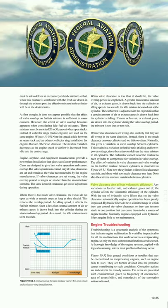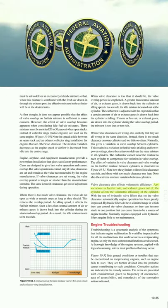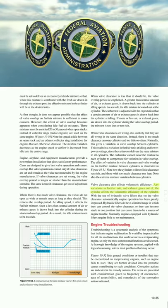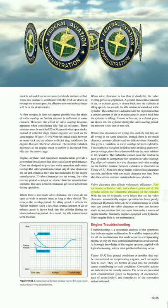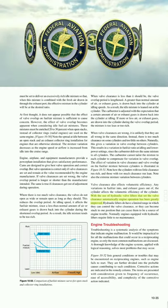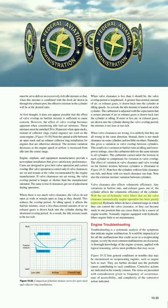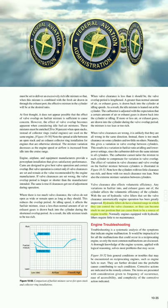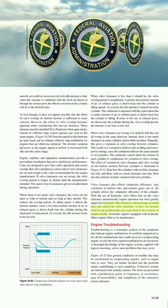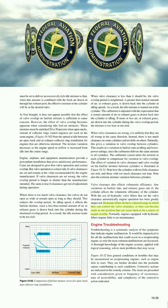Cylinders with too little clearance run rich and those with too much clearance run lean, as illustrated in figure 1051. Valve clearance also affects volumetric efficiency, since variations in fuel/air flow into and exhaust gases out of the cylinder affect its volumetric efficiency. With hydraulic valve lifters that set valve clearance automatically, engine operation has been greatly improved, though hydraulic lifters have a limited range and can become stuck, causing engine trouble. Normally, engines with hydraulic lifters require little to no maintenance.